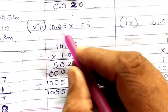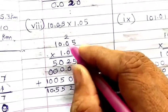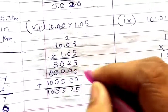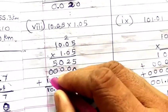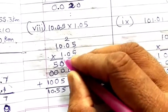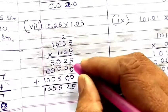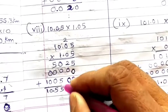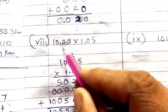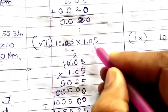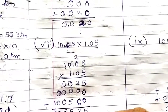Sum number 9: 10.05 into 1.05. Multiply 5 by 5 is 25, carry 2; 5 by 0 is 0 plus 2 is 2; 5 by 0 is 0; 5 by 1 is 5. Place a zero by default; multiply 0 by all — all zeros. Place two zeros by default; multiply 1 by 5 is 5, 1 by 0 is 0, 1 by 0 is 0, 1 by 1 is 1. Adding: 5, 2, 5, 5, 0, 0, 0, 1. Count decimals: 2 digits in 10.05 and 2 in 1.05, total 4. Leave 4 digits from the last and place your decimal.